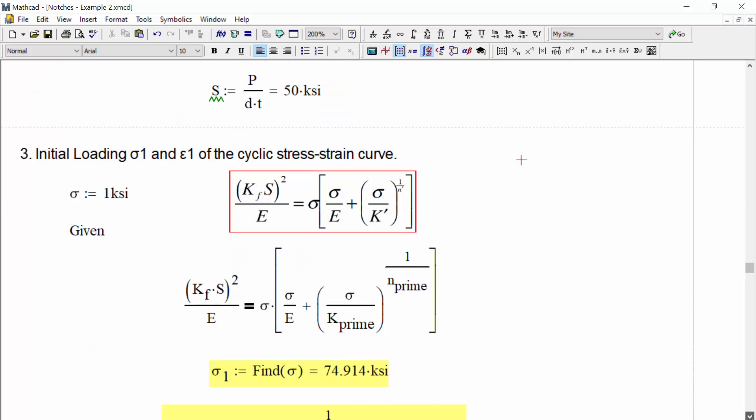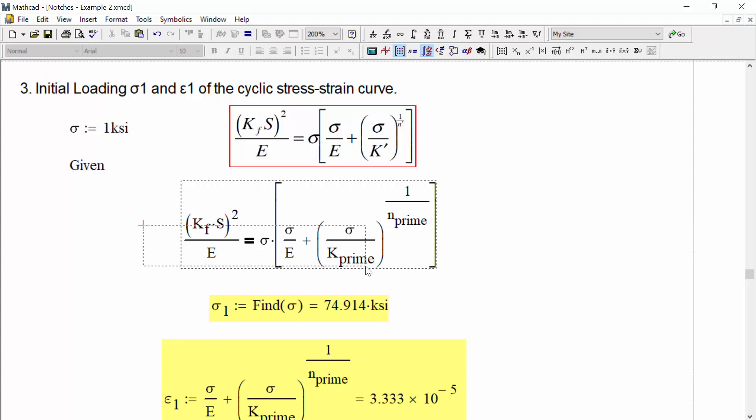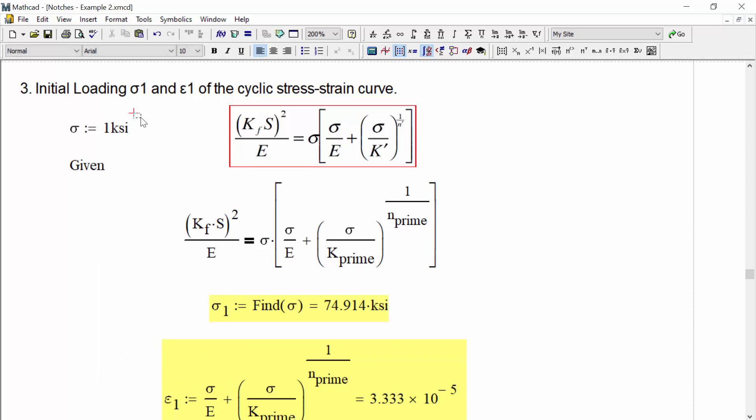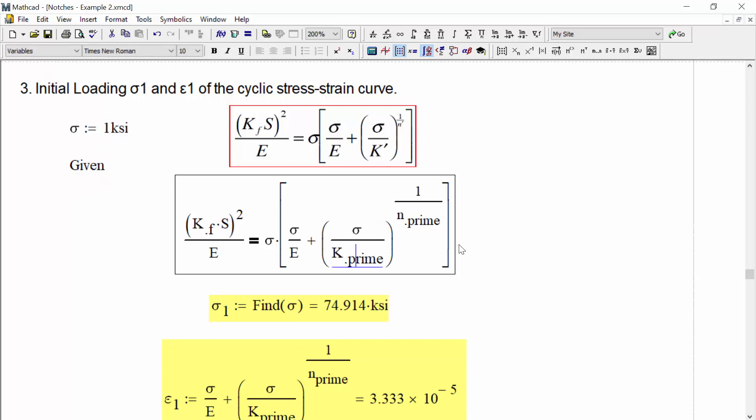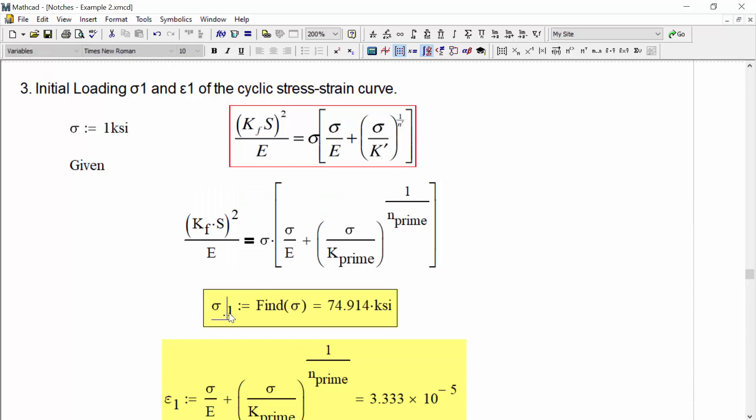So now that we've got that equation established, let's go about finding our initial loading, where we start at zero stress and we load up to the maximum value during our fatigue cycle. So let's find that. And it'll get us sigma 1 and eta 1 of the cyclic stress strain curve. So we take the equation and we program it into MathCAD here with our K prime and our N prime that we defined much earlier. And then here in MathCAD, we're doing a solve block. So we initialize sigma and say sigma is an initial guess of 1 kSI. We say, given this equation, if this equation is true, find what is the value of sigma to make this equation true. We find that sigma 1 ends up being 74.9 kSI.